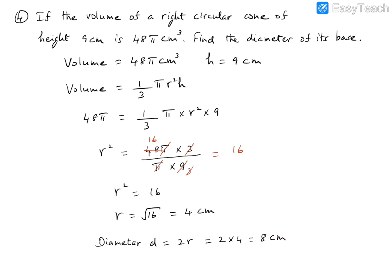The radius is 4 cm, but we are asked for the diameter, so diameter d = 2r = 2 × 4 = 8 cm. A useful tip: when a parameter is given in terms of π, keep π as it is — it will often cancel out during calculation and simplify the work.